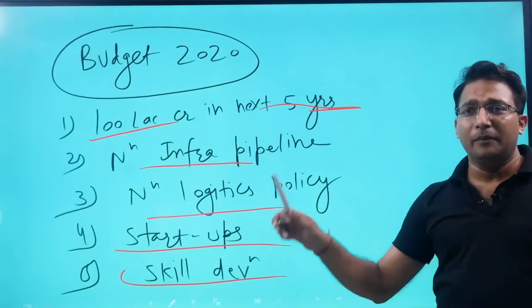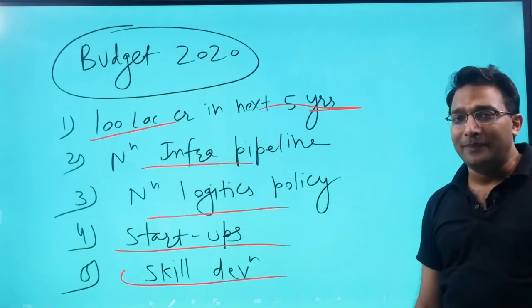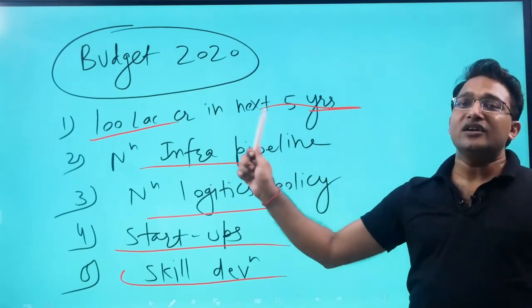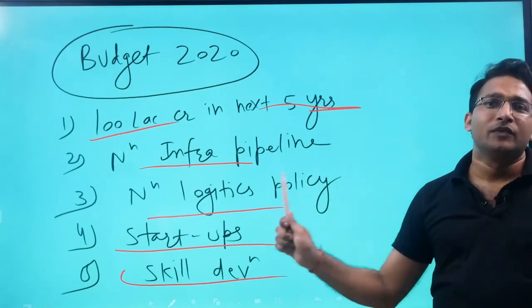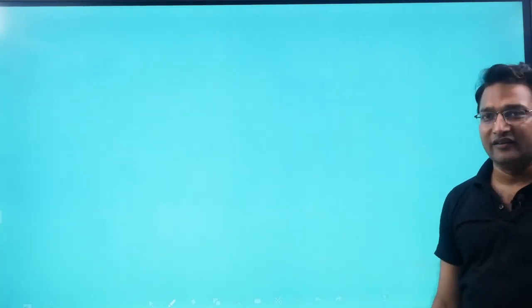In Budget 2020, one hundred lakh crore rupees have been planned for the next five years under the National Infrastructure Pipeline, along with National Logistics Policy, startups, and skill development initiatives.